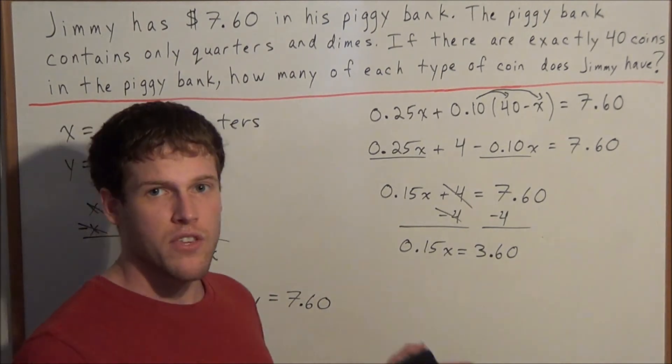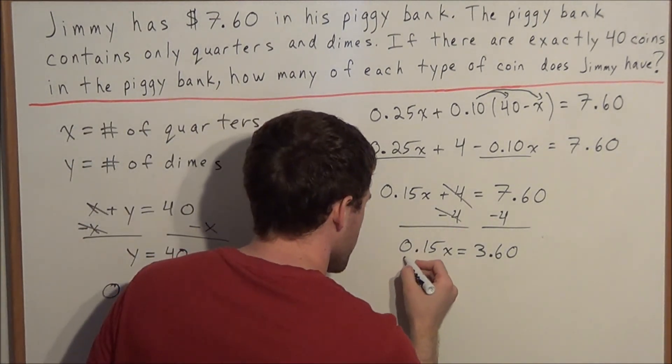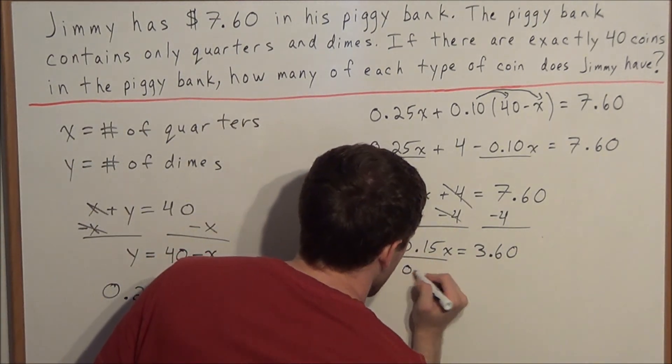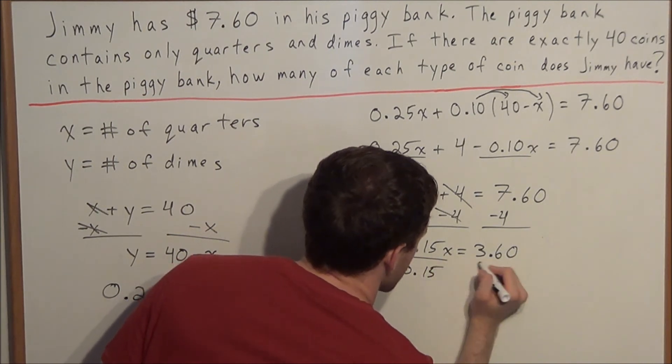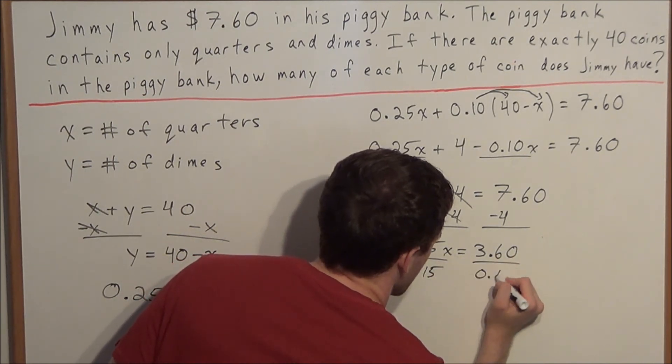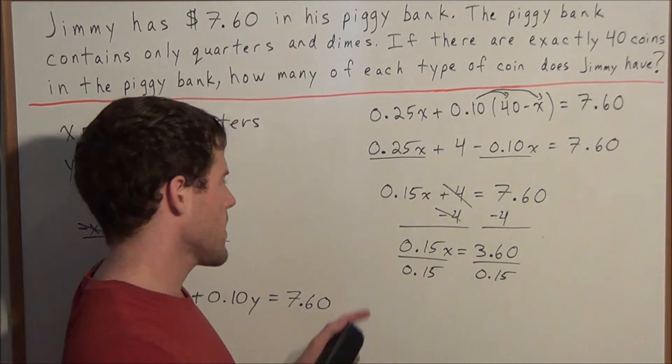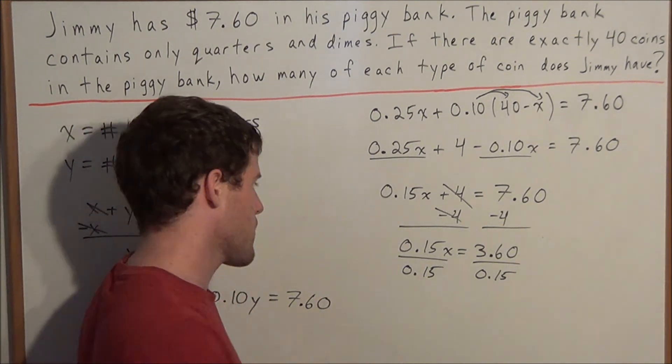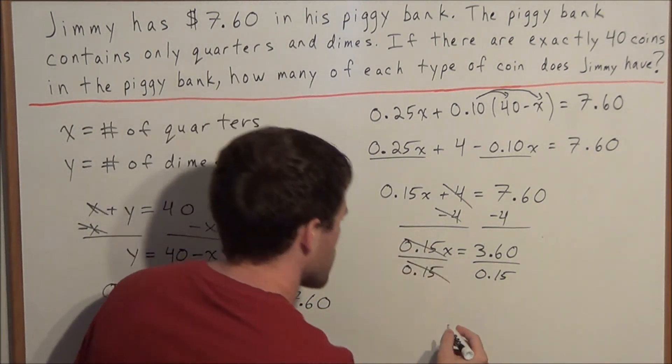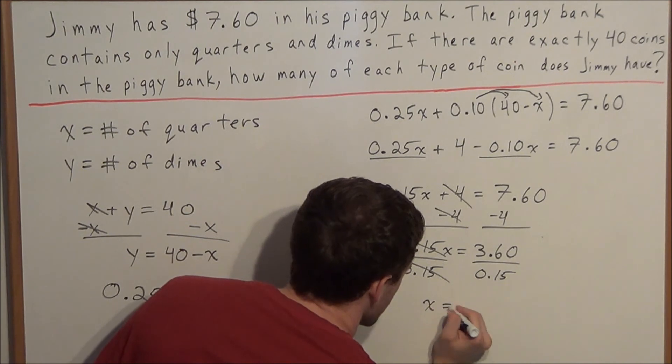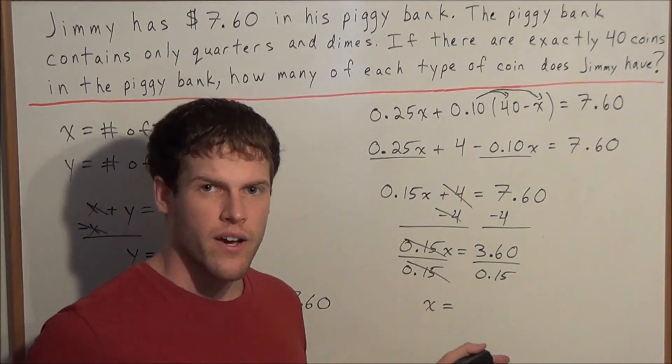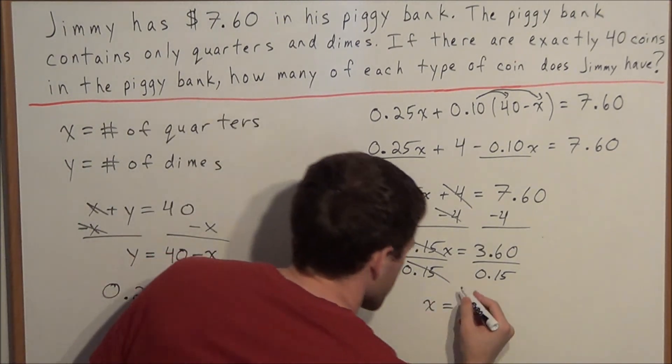So now to get x by itself, the only thing we need to do now is divide by 0.15. So we're going to divide both sides by 0.15. And now on the left-hand side, 0.15 divided by 0.15 will cancel. So we have x is equal to 3.60 divided by 0.15 gives us 24.